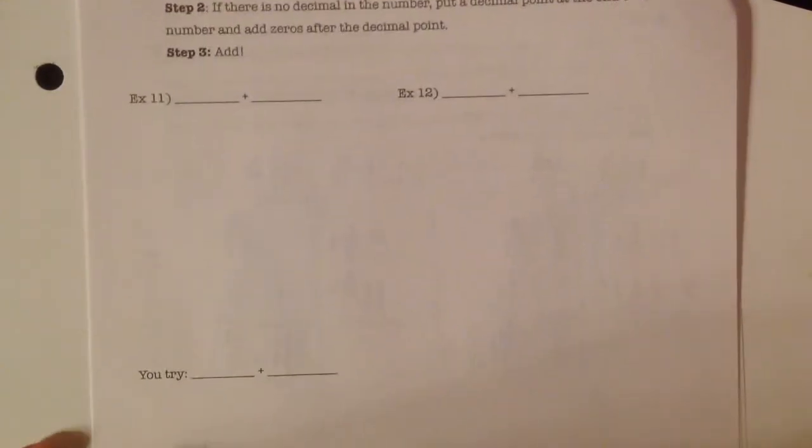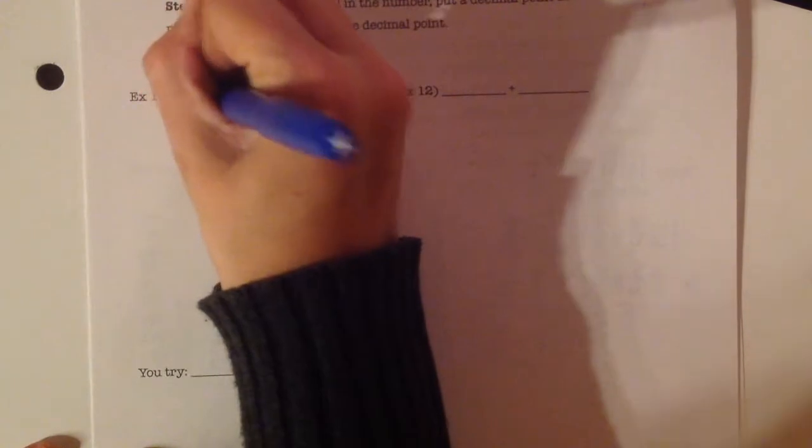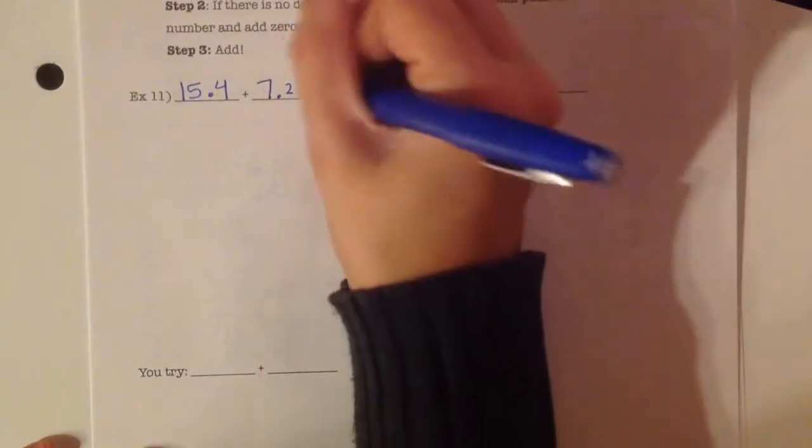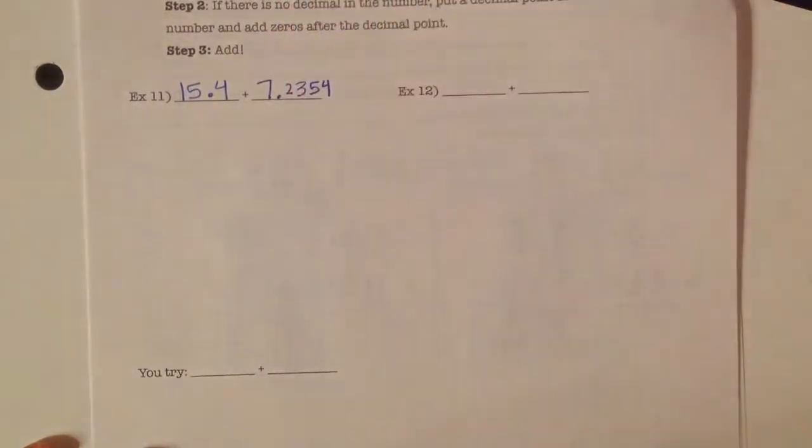So, problem number 1. 15 and 4 tenths plus 7 and 2,354 ten thousandths.